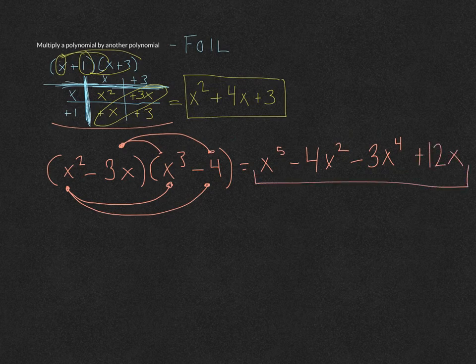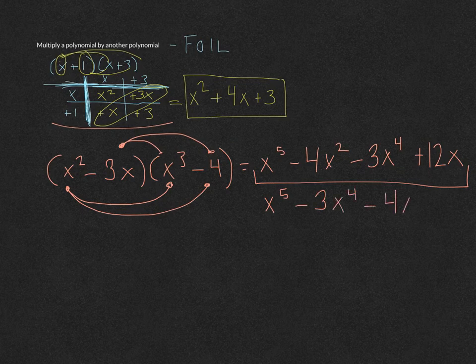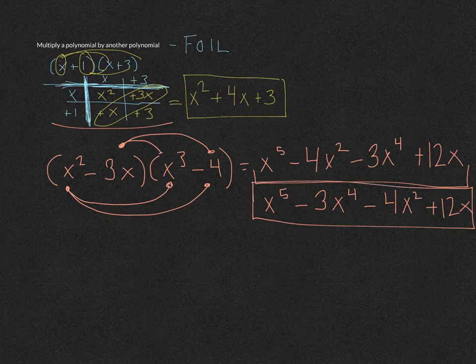Now that we have all the terms, you always want your polynomial written in decreasing power order. So we start with x to the fifth. Since x to the fourth is a higher power than x squared, we write negative 3x to the fourth next, then negative 4x squared, and finally plus 12x. That is the final answer for that binomial times binomial multiplication.